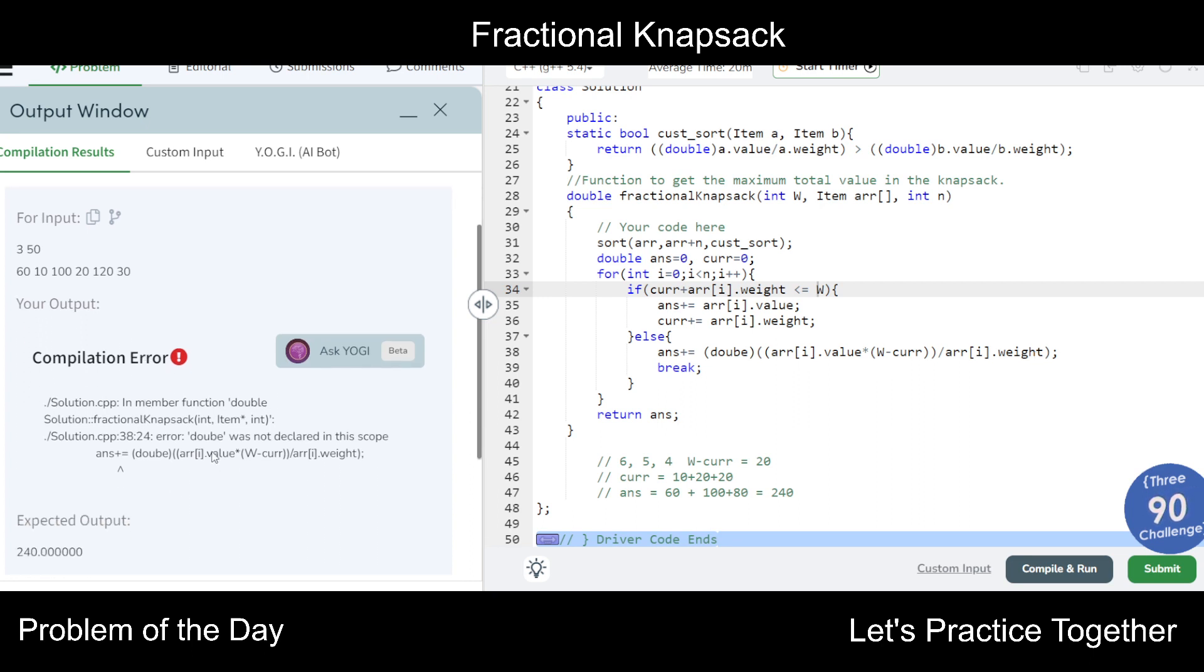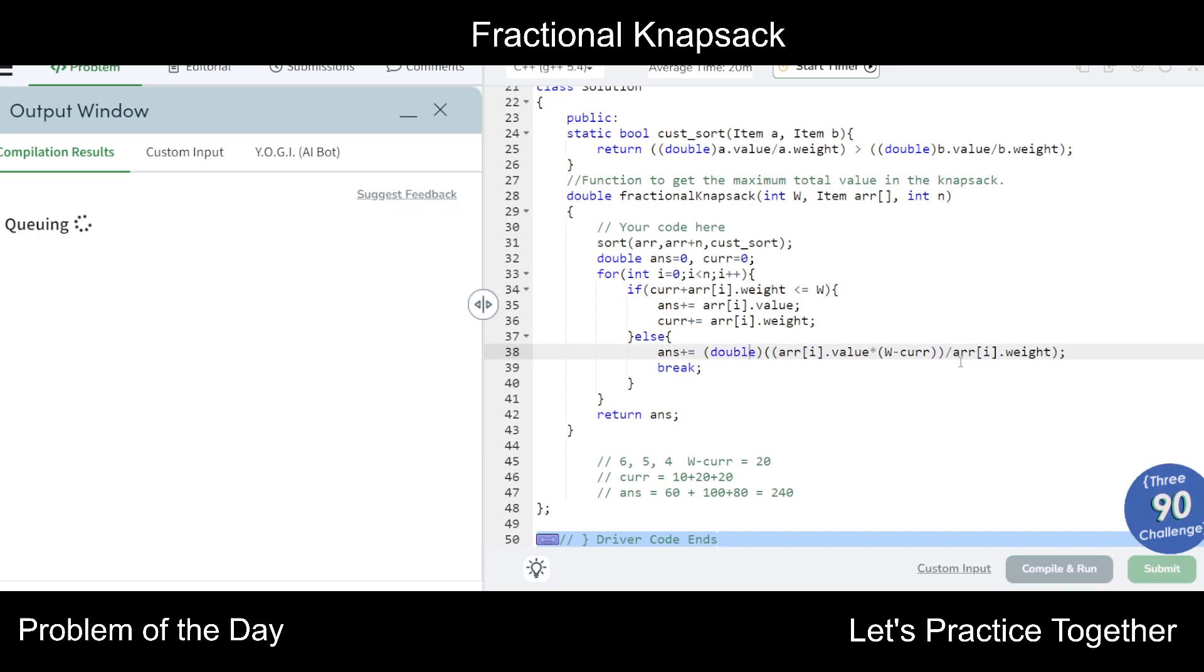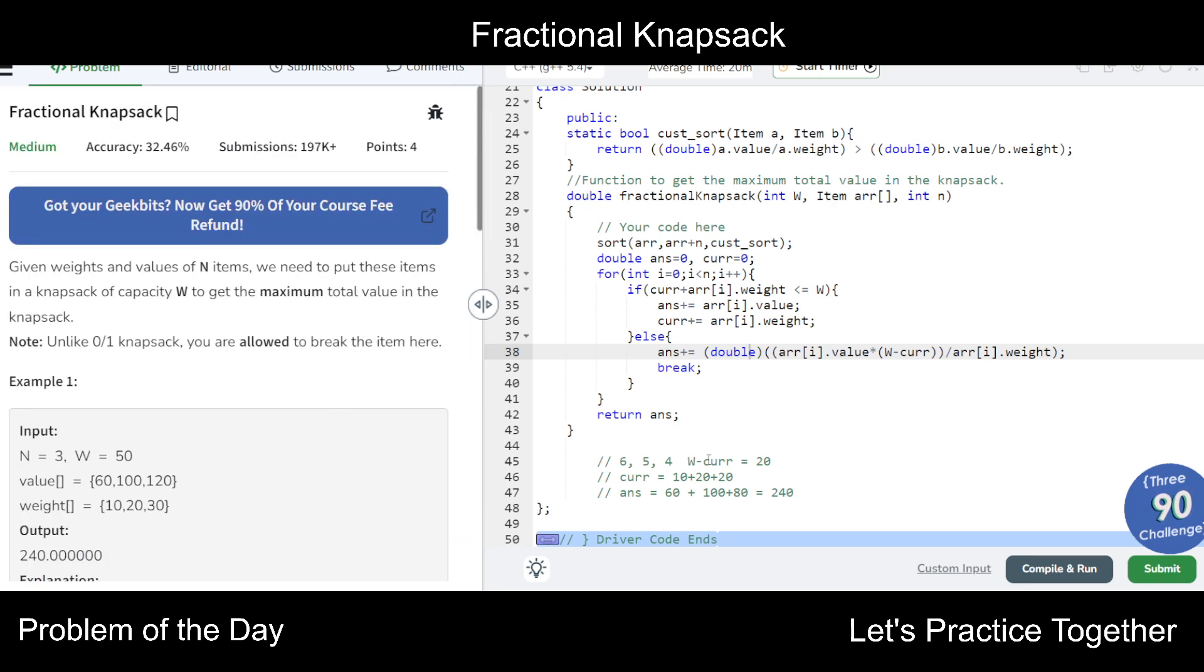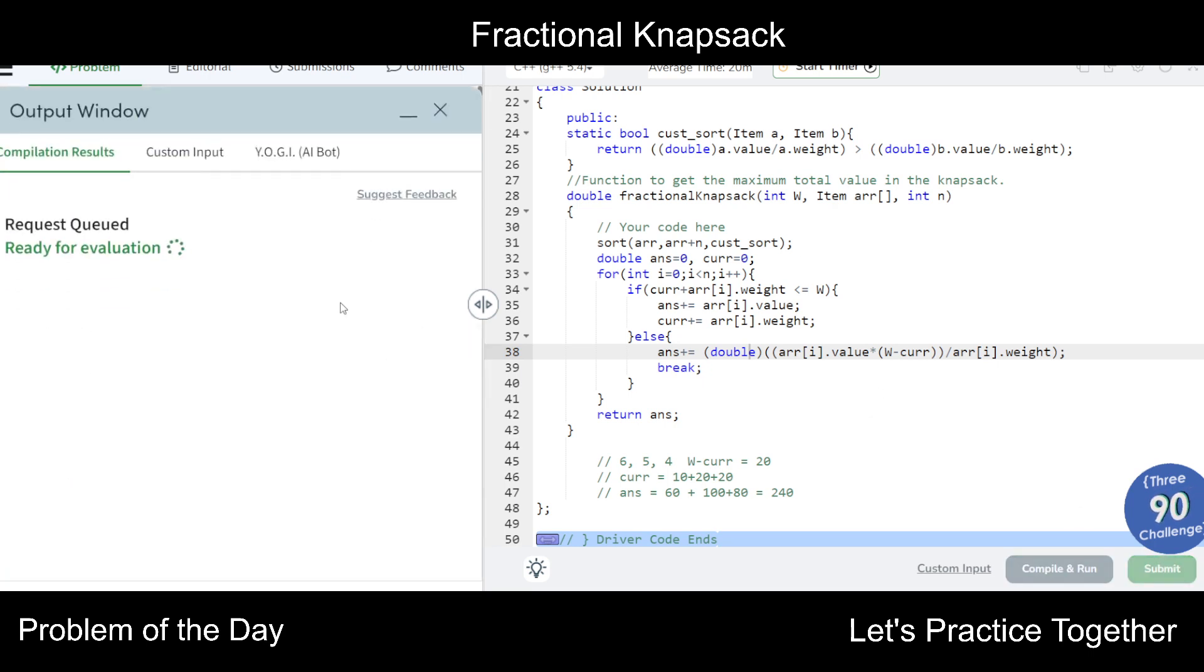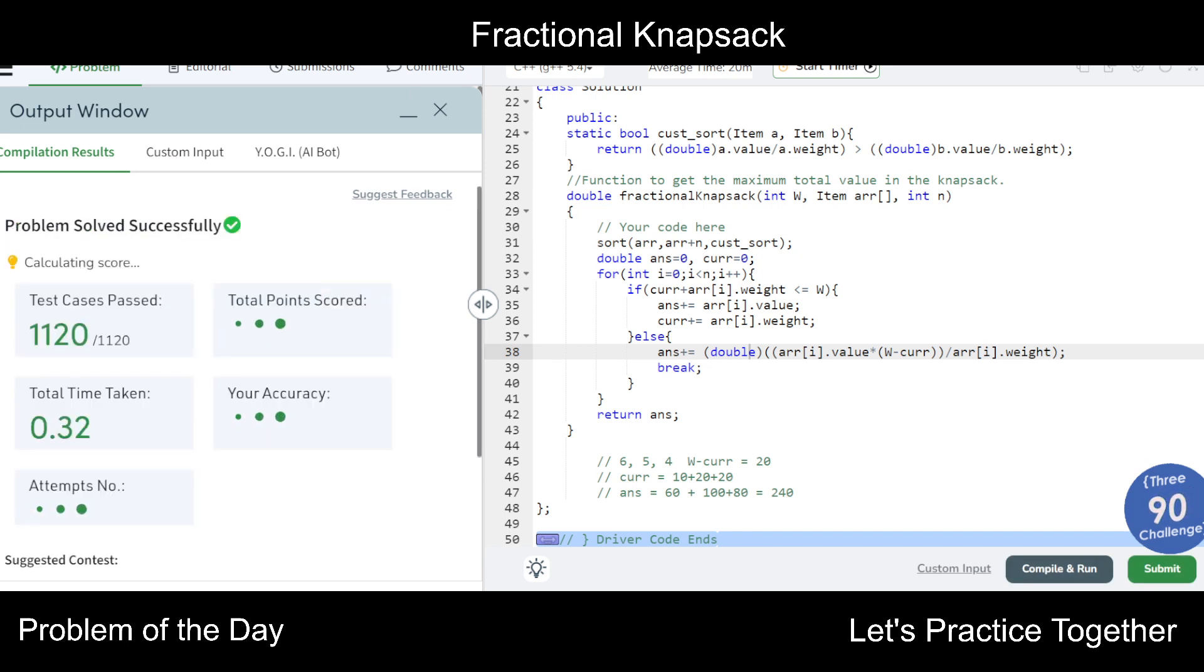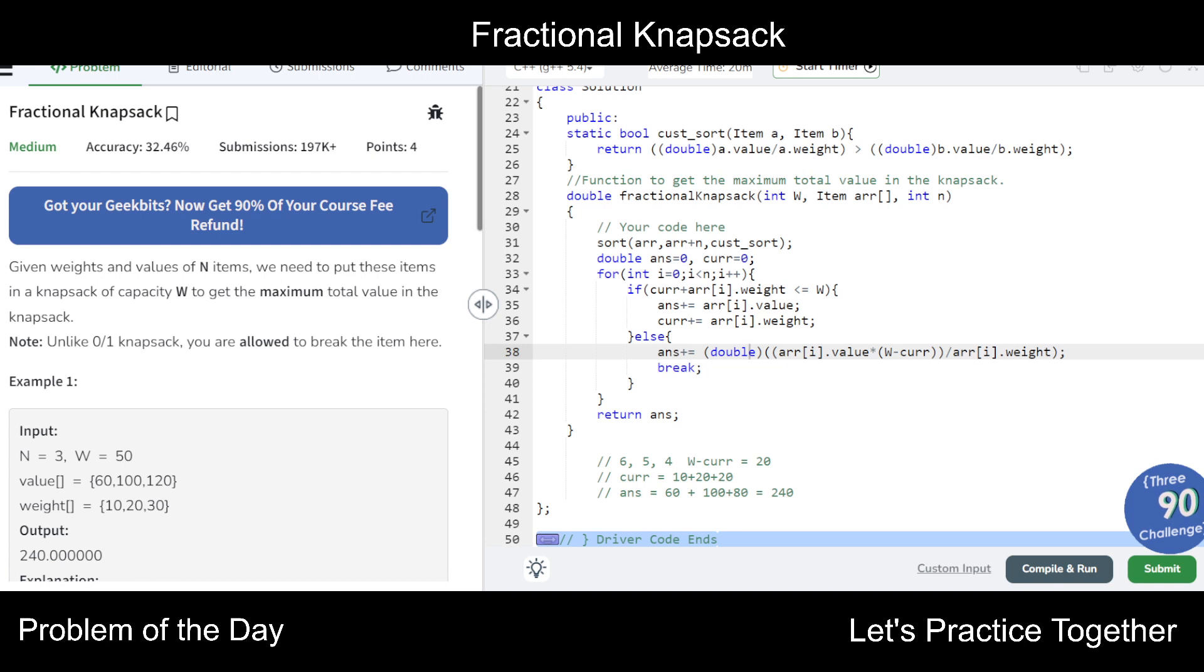There was a small issue with the double declaration. If you compile and run and submit the problem, you can easily handle these issues. Here our output correctly came as 240. So that's it, that was today's question. If we submit this, we will easily get a successful result. If you have any problem, you can ask me in the comments. We'll meet again with a new question. Till then, goodbye, stay blessed, stay safe and keep coding.